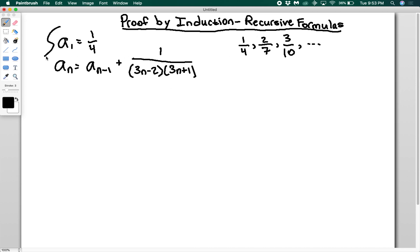So this is recursive, and our explicit formula is going to be an = n/(3n+1).